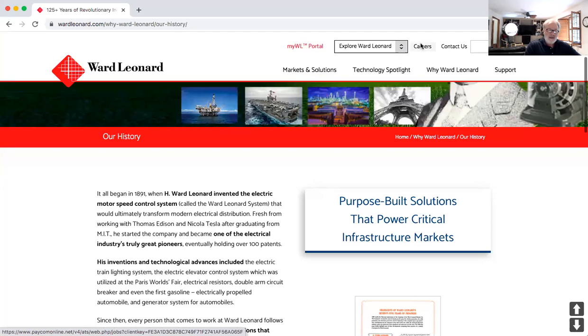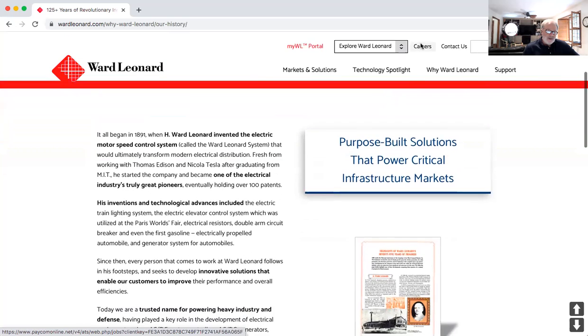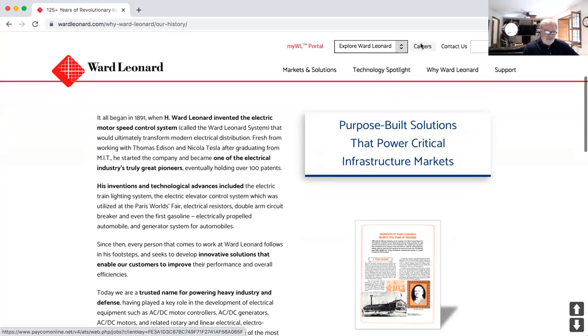So first, maybe a little background. Before we go into the details of this system, I think it's kind of interesting. I really didn't know this until this year, that this company Ward-Leonard still exists to today, and it goes in some explanation here on their website. It all began in 1891 when H. Ward-Leonard invented the electric motor speed control system called the Ward-Leonard system that would ultimately transform modern electrical distribution.